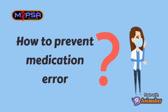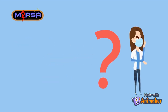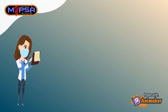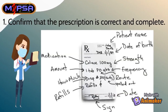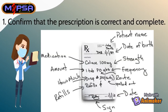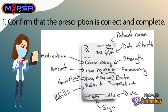Let's discuss the ways to prevent medication errors. First and foremost, we must confirm that the prescription is correct and complete. Ambiguous prescriptions, non-standard abbreviations, acronyms, decimals, and call-in prescriptions are frequently associated with medication errors. Therefore, whenever in question, it is important to call the prescriber to clarify any uncertainties or doubts regarding the prescription.